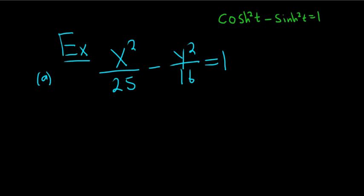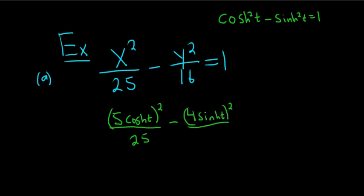So if we were to replace x with 5 cosh t, let's look at what would happen. We would have this over 25. Likewise, if we were to replace y with 4 sinh t, we would have this and it would be over 16.